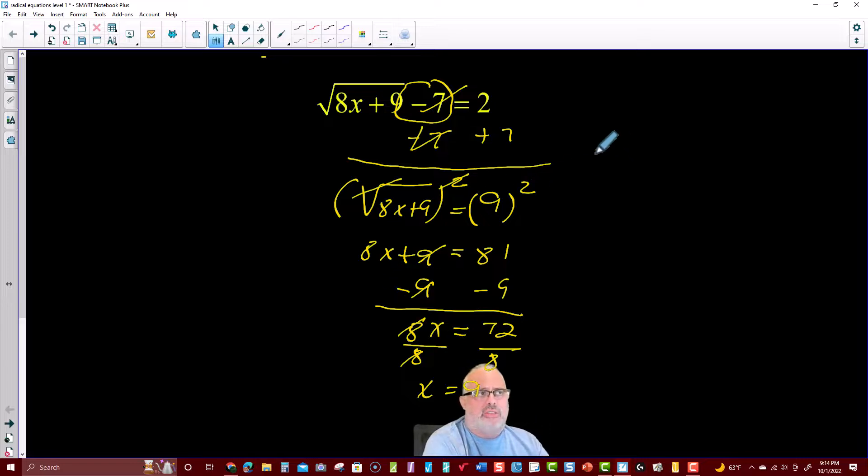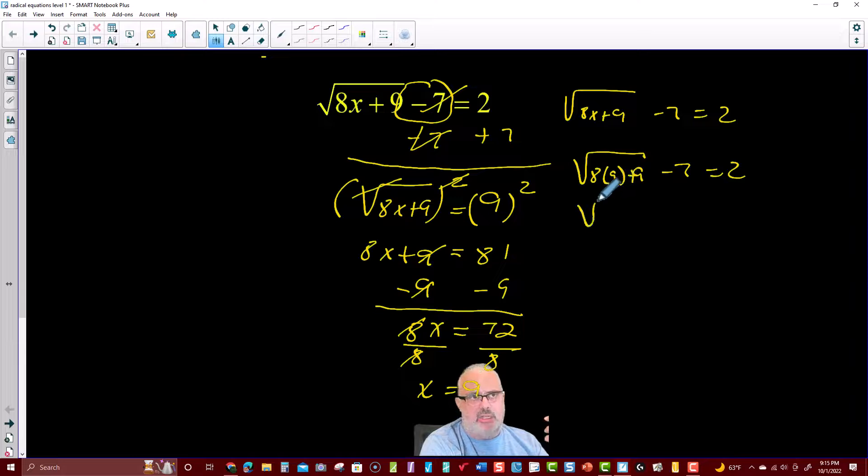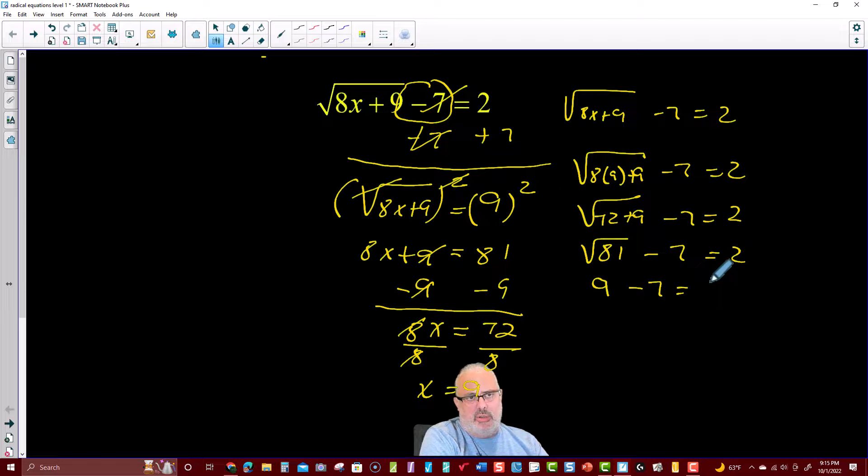If you want to prove that this is totally right, you come over here and you write the original equation, and you must have a true statement. If I replace the x by 9, I have 8 times 9 is 72, and 72 plus 9. 72 plus 9 is 81 minus 7, and the square root of 81 is just 9. It's a perfect square, and 9 minus 7 equals 2. I have 2 on both sides of the equation. This is a true statement. This is the solution.